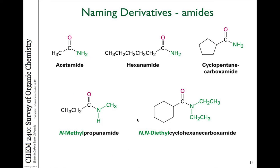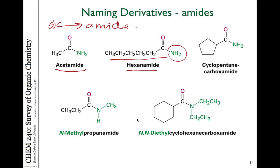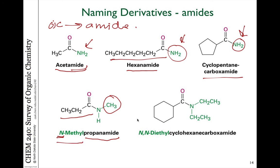Naming amides from the corresponding carboxylic acids means dropping the OIC ending and changing it to amide. So acetic acid becomes acetamide (or ethanamide), hexanoic acid becomes hexanamide, and cyclopentane carboxylic acid becomes cyclopentane carboxamide. If the nitrogen has further substituents, you indicate that substituent with the designation N, similar to substituted amines. For example, propanamide with a methyl substituent on nitrogen is N-methylpropanamide, and with two ethyl groups it would be N,N-diethylcyclohexane carboxamide.